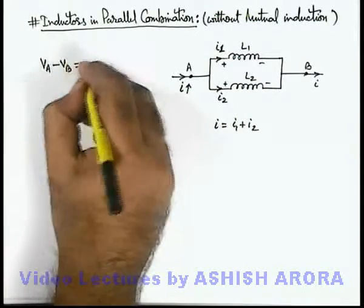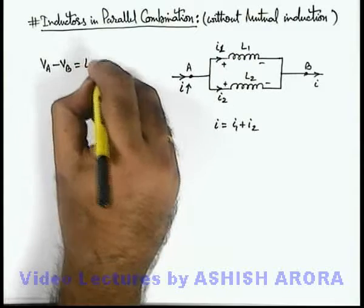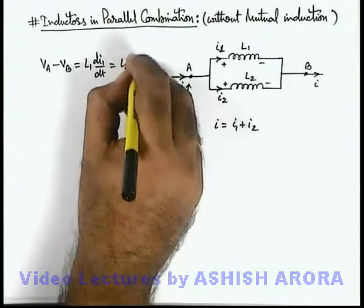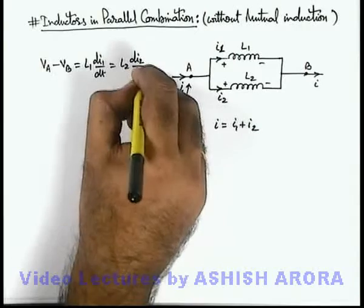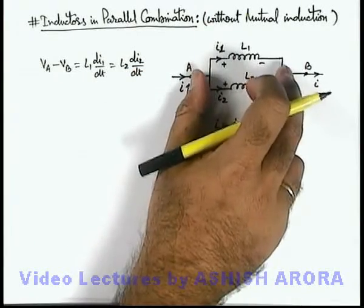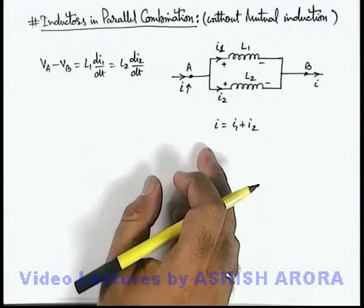This VA minus VB we can write as L1 di1/dt, as well as this is equal to L2 di2/dt, because the two inductors are connected in parallel. Their potential difference must be equal to that across A and B.